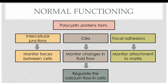To understand the pathogenesis, it is important to understand the normal functioning of polycystin proteins. Polycystin 1 and polycystin 2 together form a complex that includes intracellular junctions, cilia, and focal adhesions. Intracellular junctions monitor forces between adjacent cells; cilia arise from the centrosome and apical surface of the tubular epithelium, projecting into the lumen, and are sensitive to changes in fluid flow. Focal adhesions monitor the attachment of epithelial cells to the extracellular matrix, collectively maintaining the integrity of normal tubular epithelium.